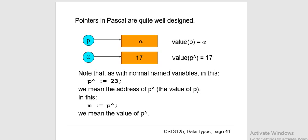Null pointers do not point to any memory location. They can be created by assigning a null value to the pointer. A pointer of any type can be assigned the null value. Void pointers — also called generic pointers — are pointers of type void; they do not have any associated data type and can point to any type, and can be typecast to any data type. Wild pointers are pointers that have not been initialized yet; this type of pointer can cause problems in a program and can usually cause it to crash.